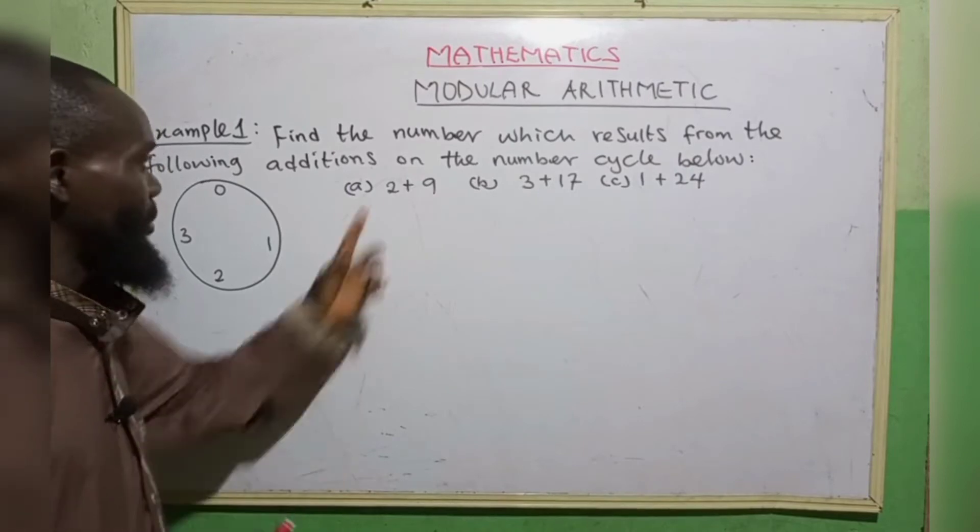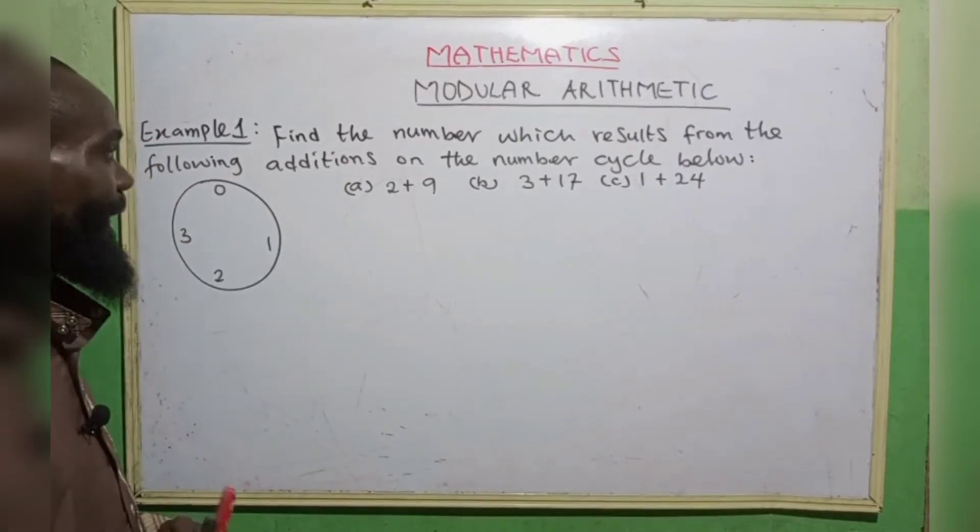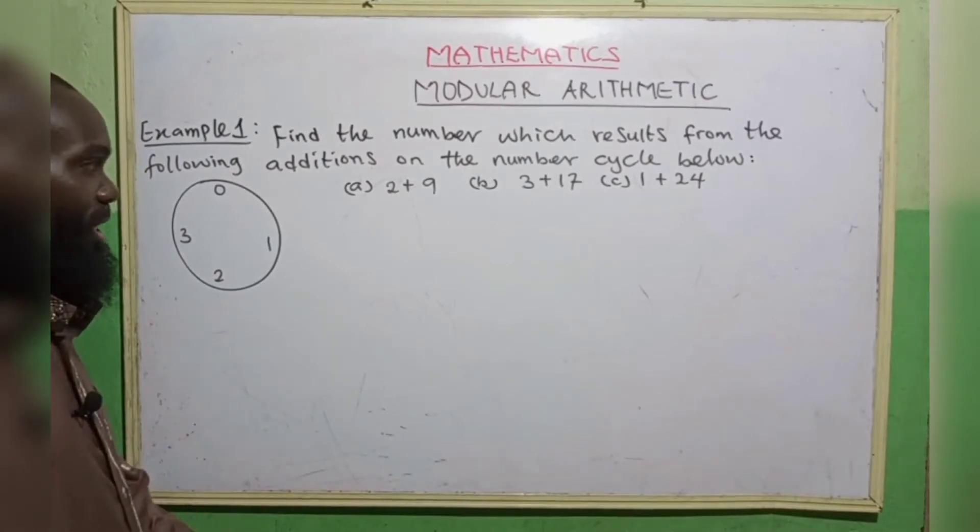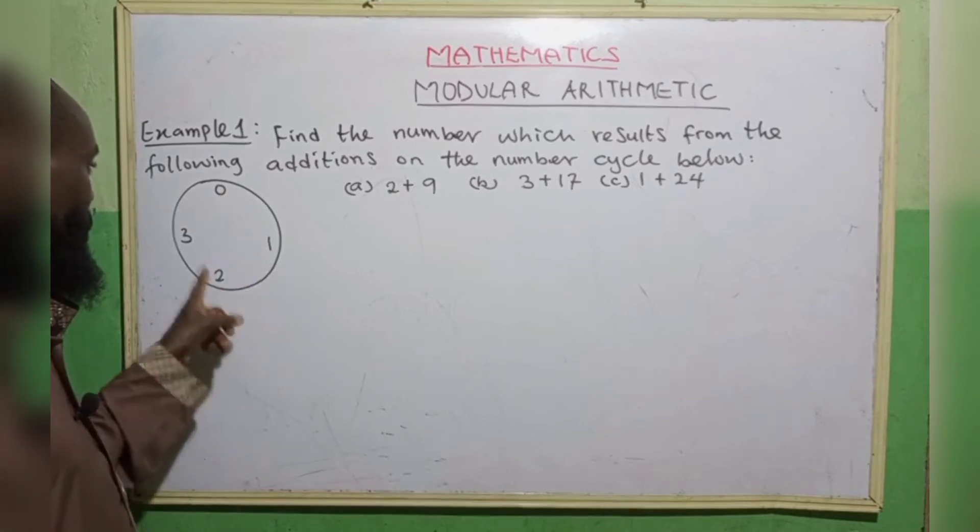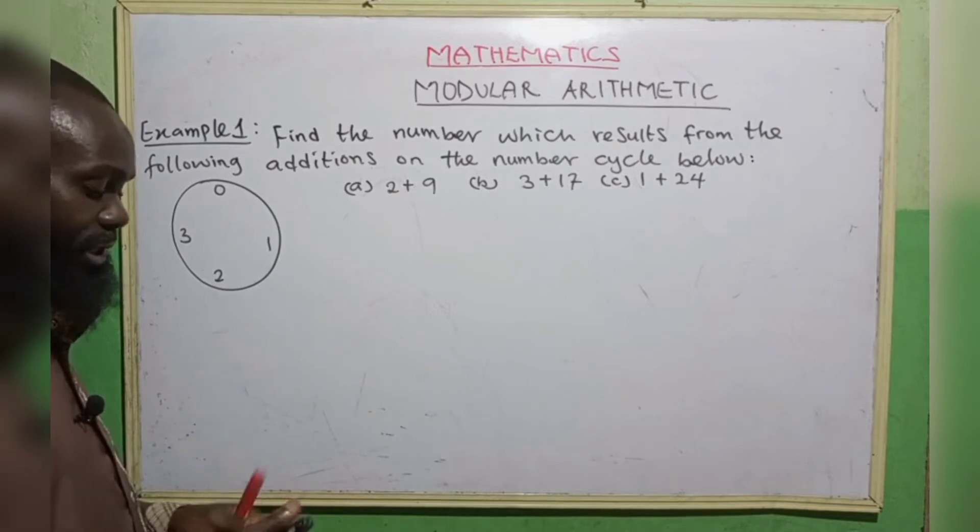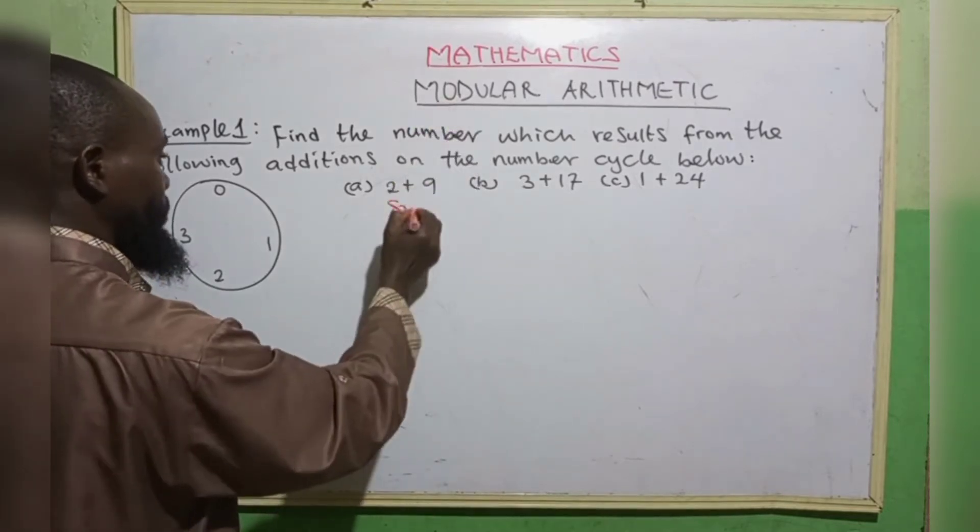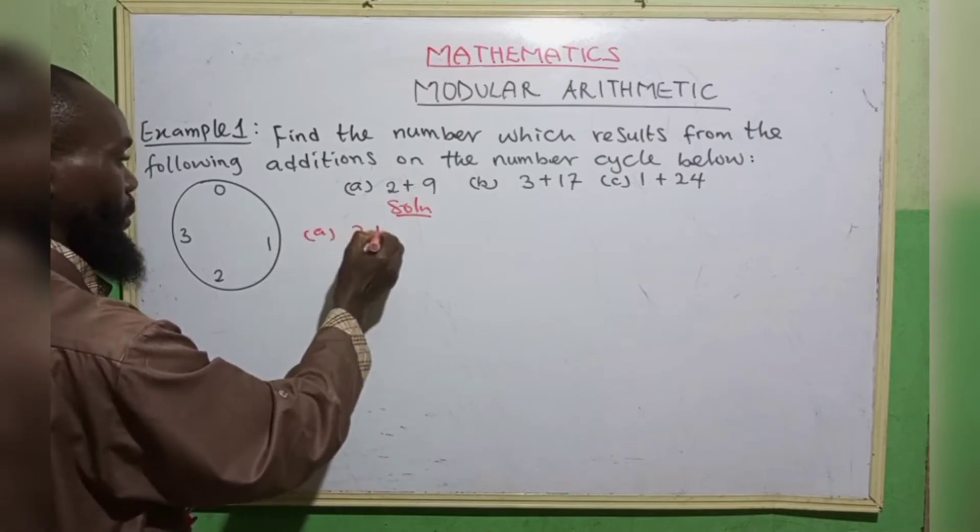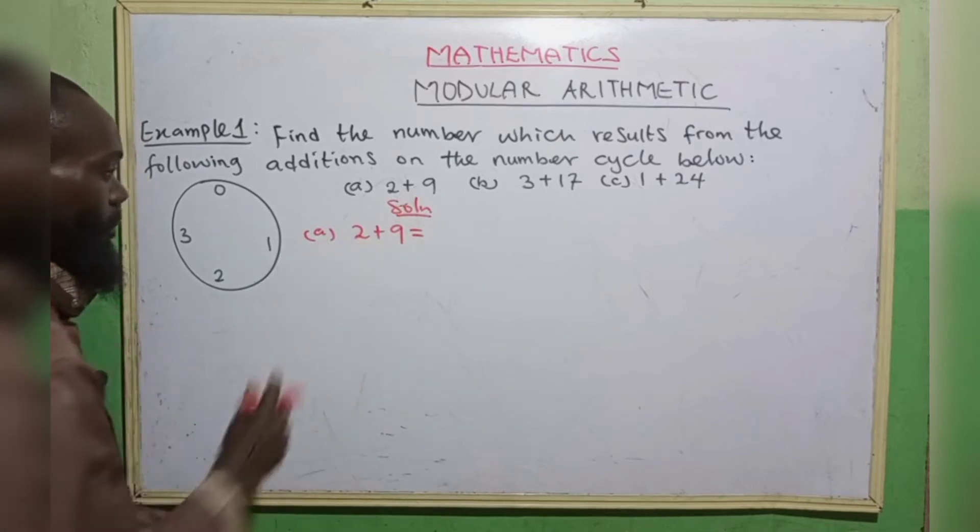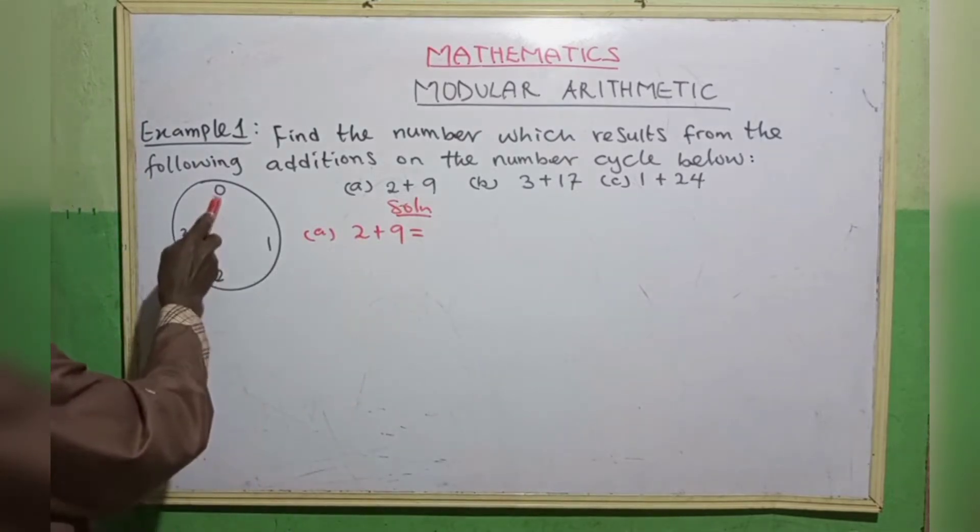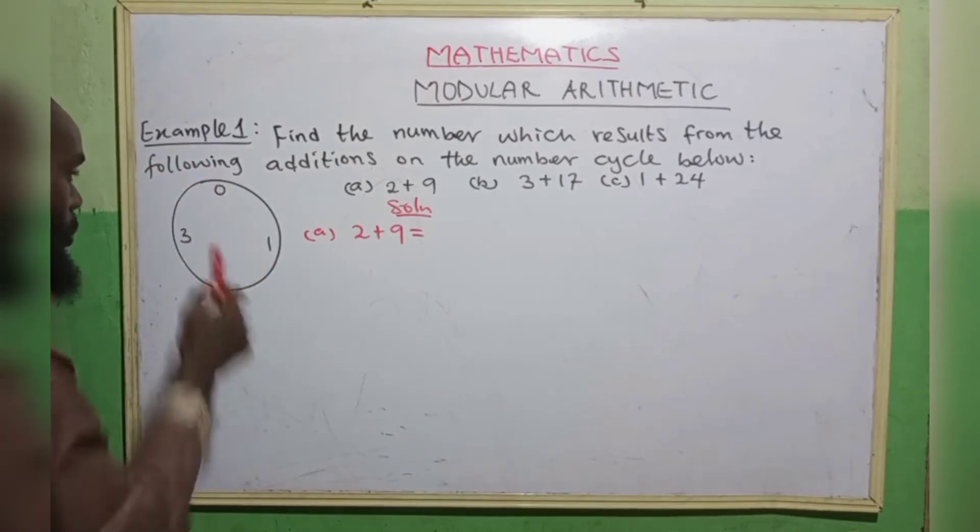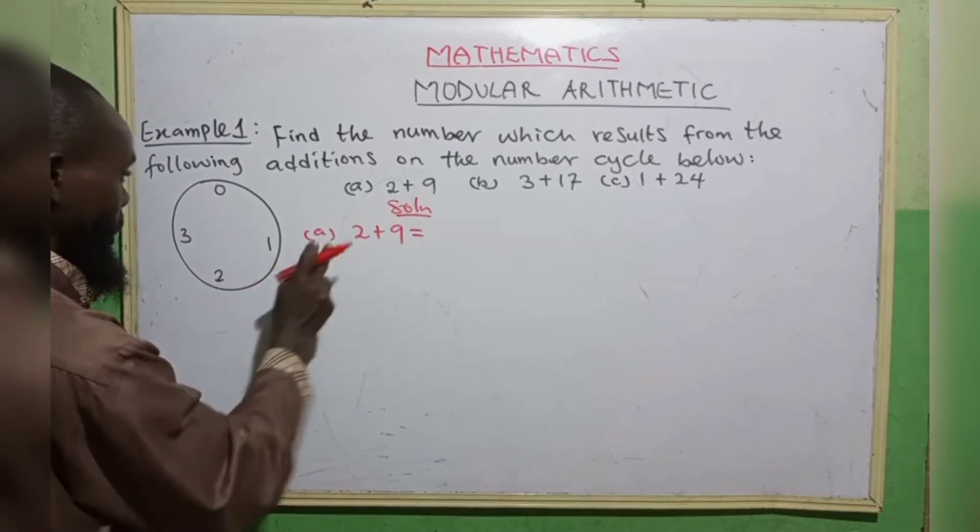Example 1, find the number which results from the following additions on the number cycle below. So this is the number cycle. In what modulo? 0, 1, 2, 3, 1, 2, 3, 4. This is modulo 4. So we want to find the addition of this. So we have the first one, 2 plus 9. So 2 would be equal to, this is 0, 1, 2. So you are going to count 2, starting from this 0, 1, 2. So we have 2 is equivalent to 2.